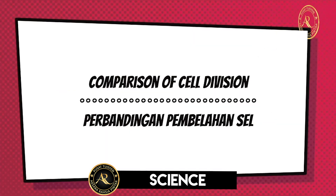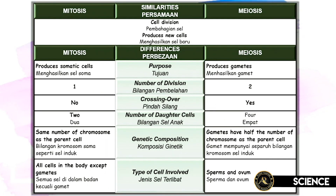Now we take a look at comparison of cell division. There's mitosis and meiosis. Mitosis and meiosis is actually cell division where one cell breaks into two, and then the cell further develops into becoming many other cells and becomes tissues, organs, and systems — all the structures you are familiar with in the human body. We start from the cell, then we go to the tissue, then to the organ.